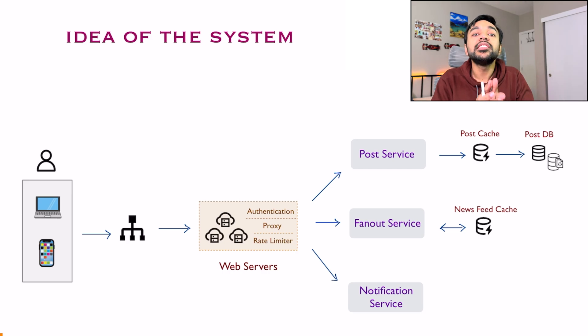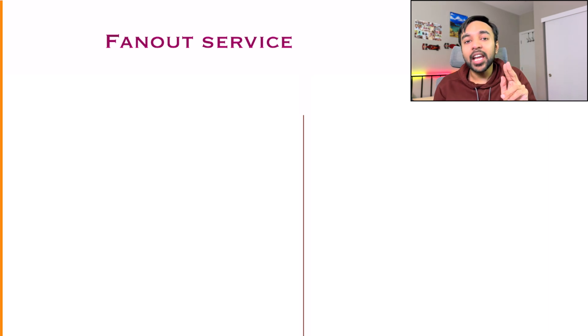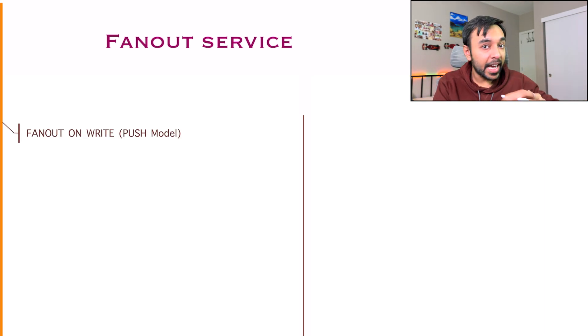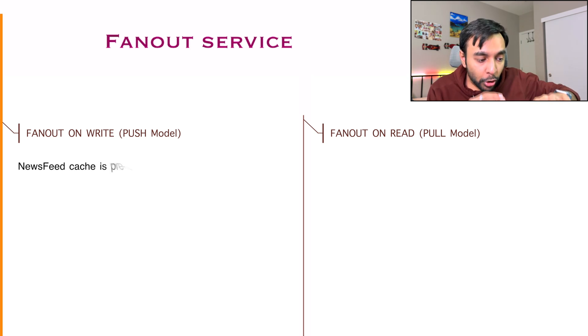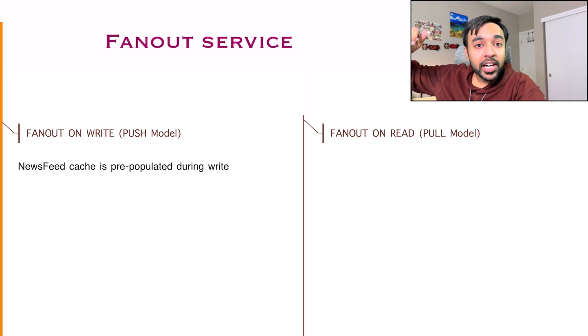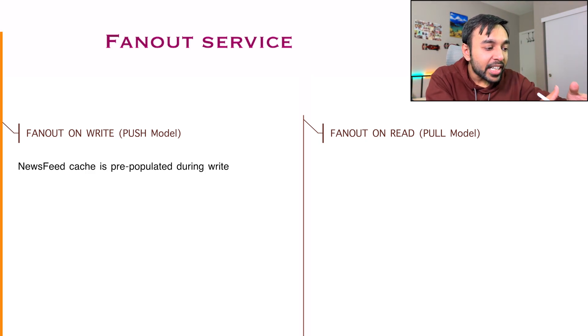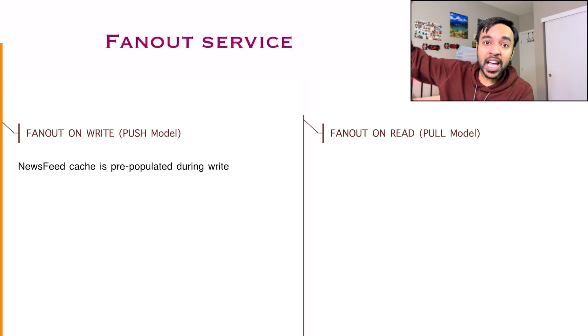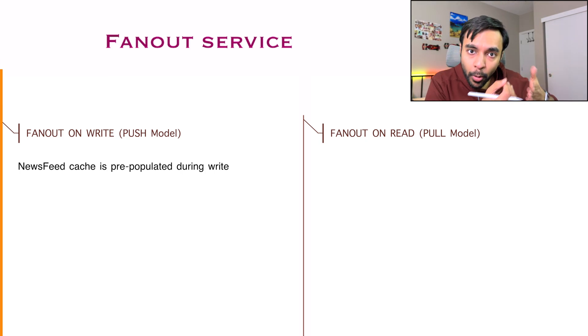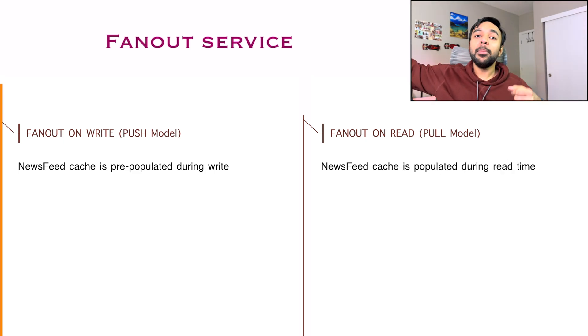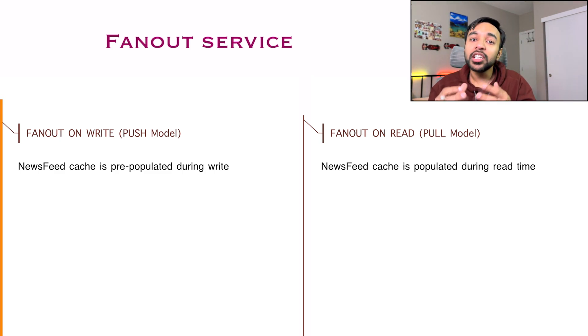So let us focus on this particular concept called fan out. A fan out service is a process where you take up an update and then distribute it to all of the friends available. This fan out service can be done in two particular ways: either you do a fan out on write — that is called the push model — or you do a fan out on read — that is called the pull model. A push model means that the news feed of a particular friend is pre-computed. As soon as I have an update, let's say I have 10 friends, I will update the news feed of all of these 10 friends beforehand, even before they have opened the app. In a pull model, I do the opposite — only when a friend opens the app, I will pull the update and they will see all of the updates I have posted.